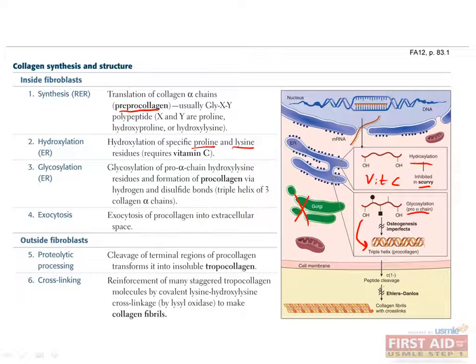After exocytosis, collagen is cleaved to tropocollagen. This cleavage occurs on lysine residues. And then, individual tropocollagen molecules are bound together, also with lysine residues. This results in the final product, collagen fibrils. Mutations in the enzymes required for some of these steps can cause diseases such as osteogenesis imperfecta and Ehlers-Danlos. We'll cover these in more detail in the next few slides.